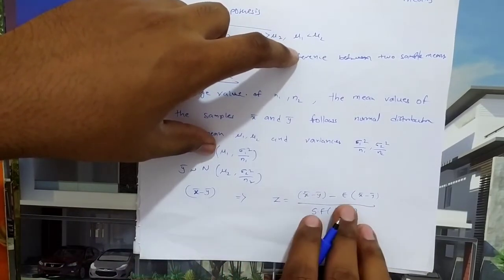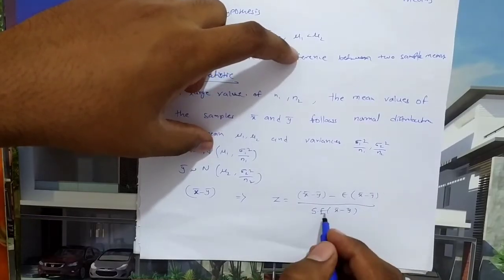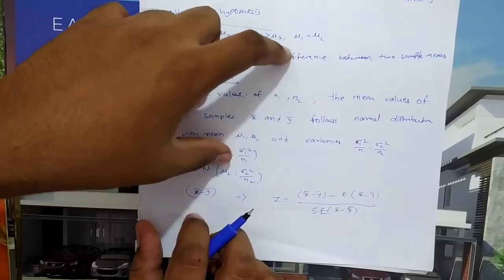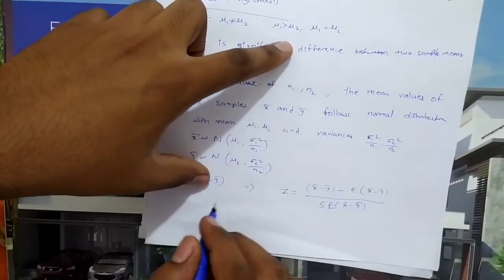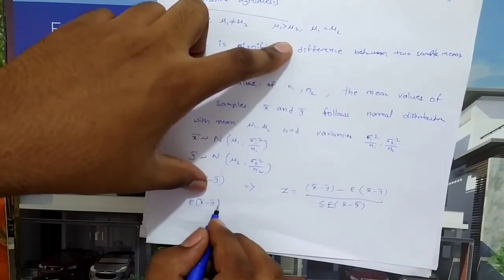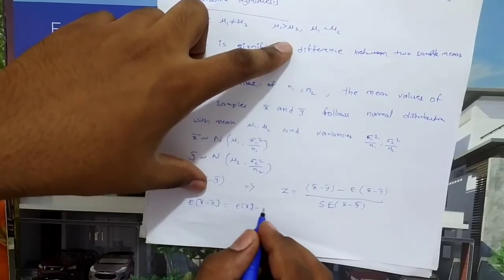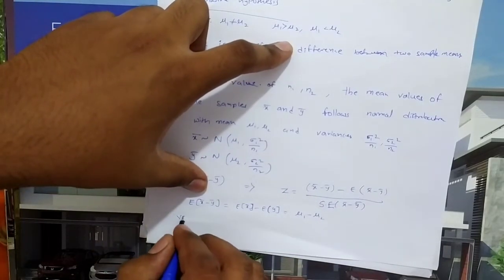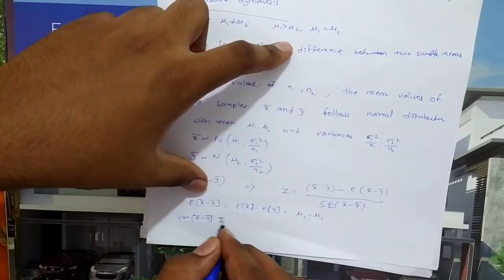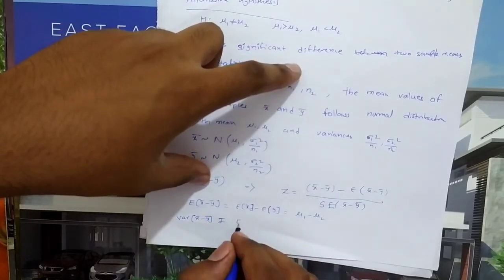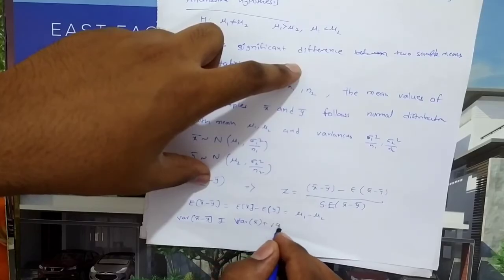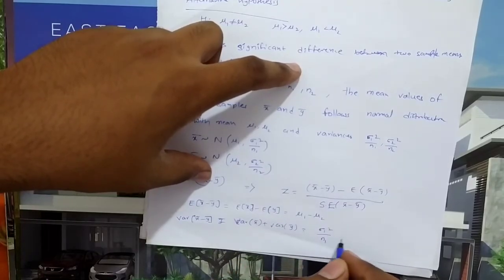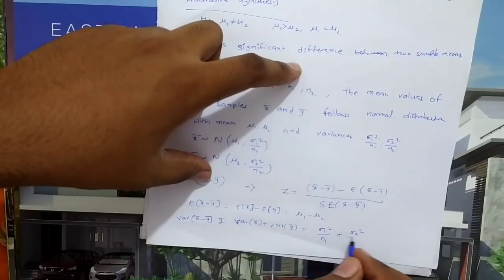The standard normal variate is: Z = (x bar minus y bar minus expectation of x bar minus y bar) divided by standard error of (x bar minus y bar). We need to find expectation of (x bar minus y bar) = mu1 minus mu2. Since x bar and y bar are independent, variance of (x bar minus y bar) = variance of x bar plus variance of y bar.